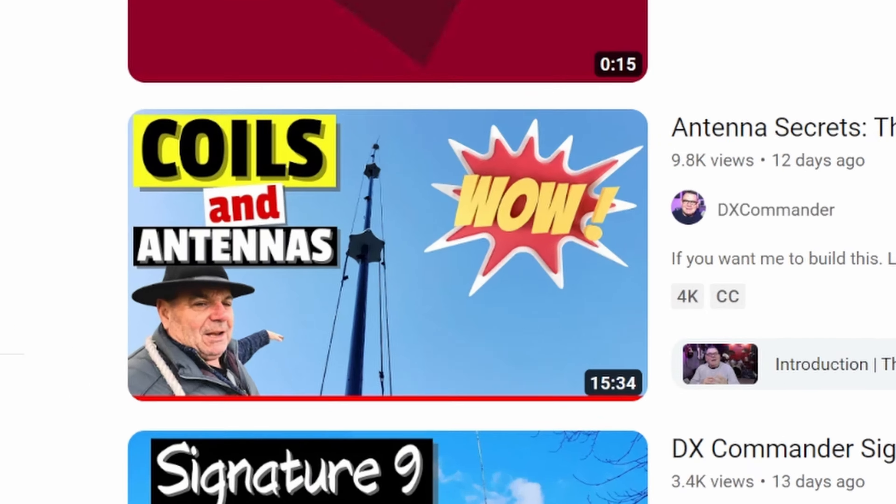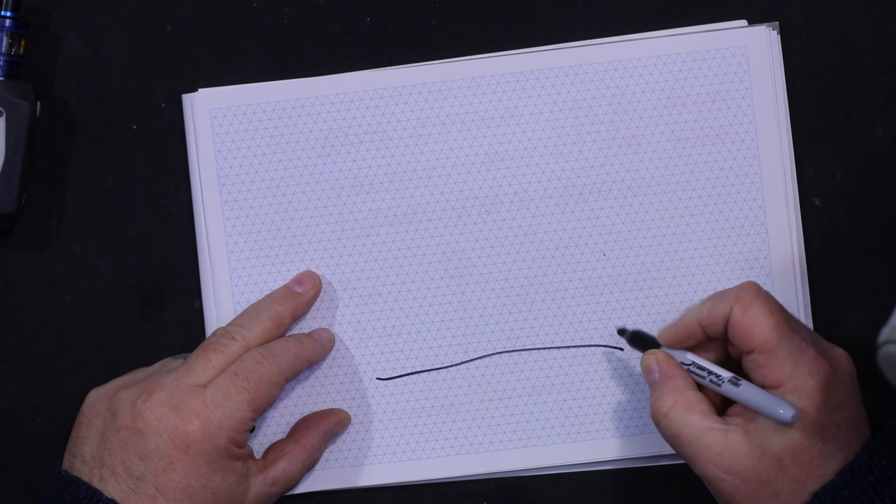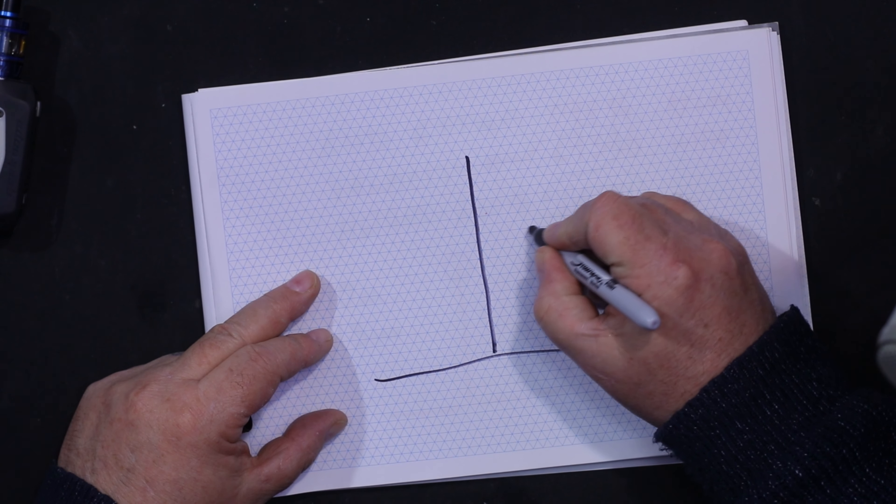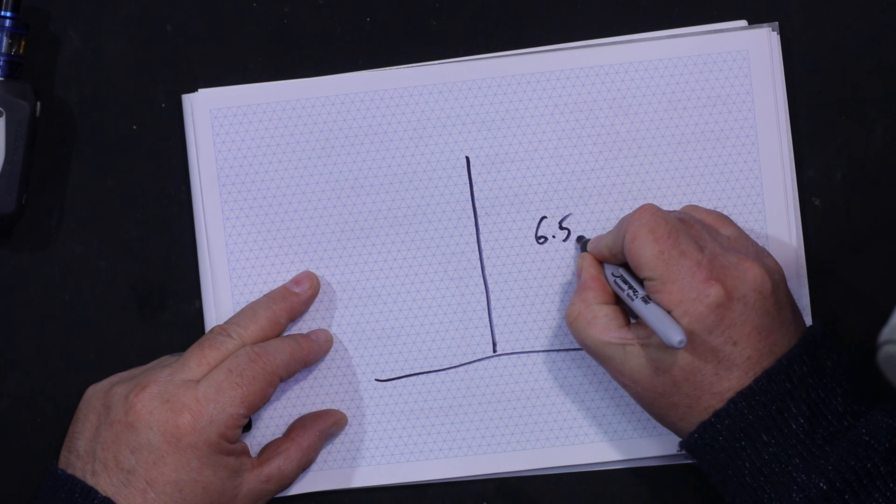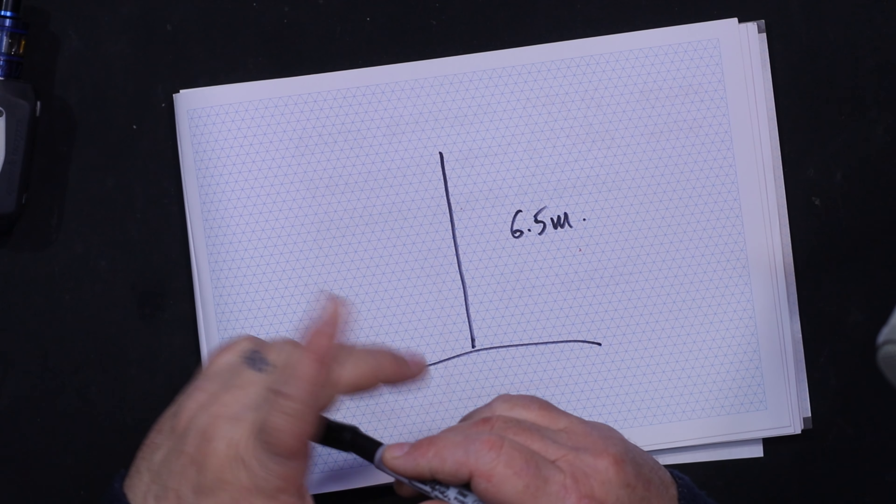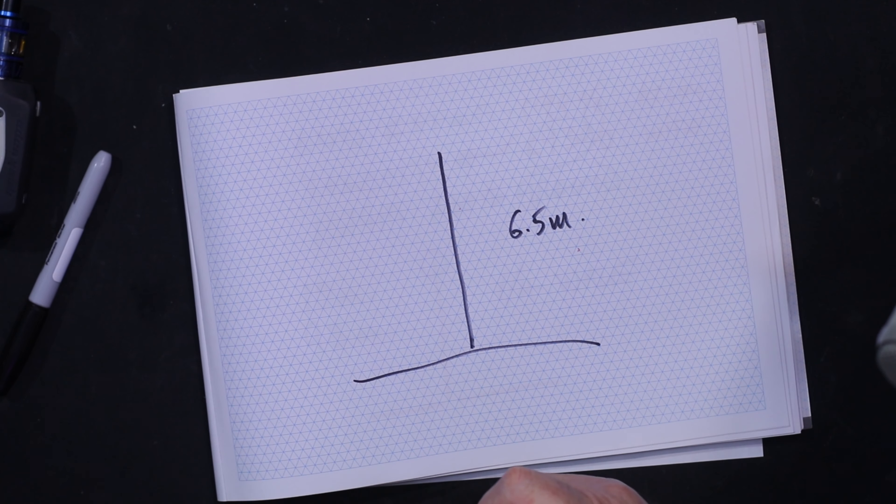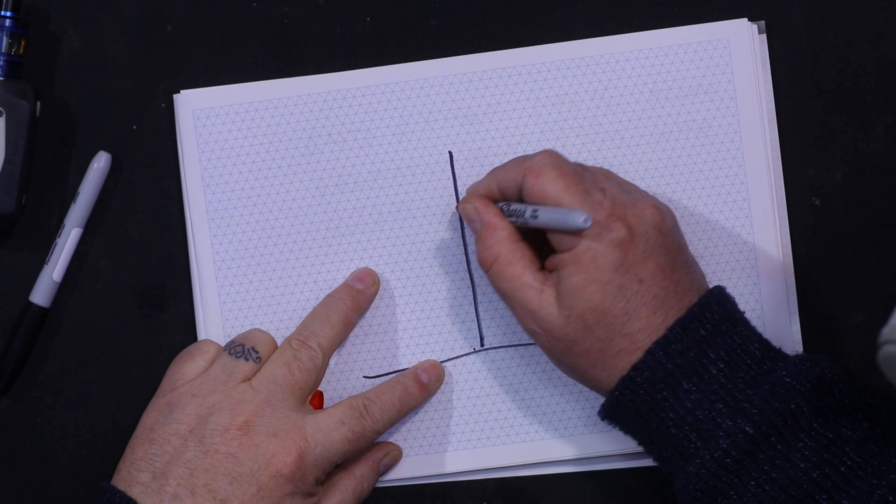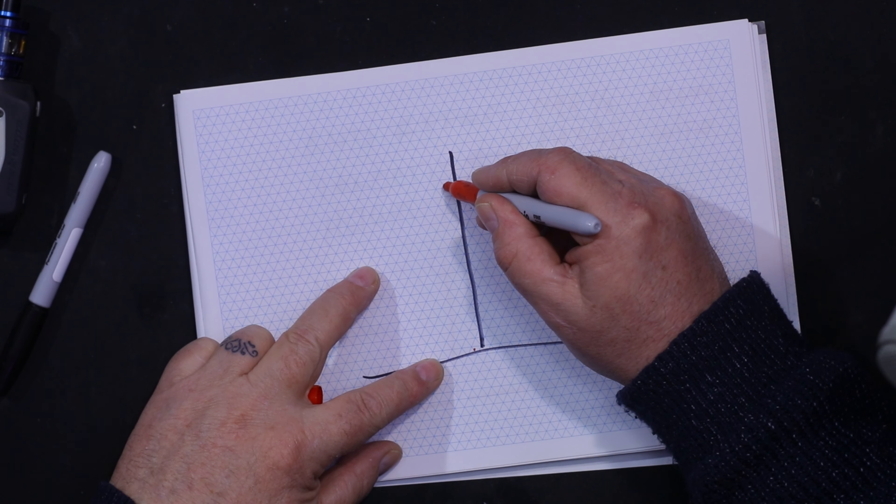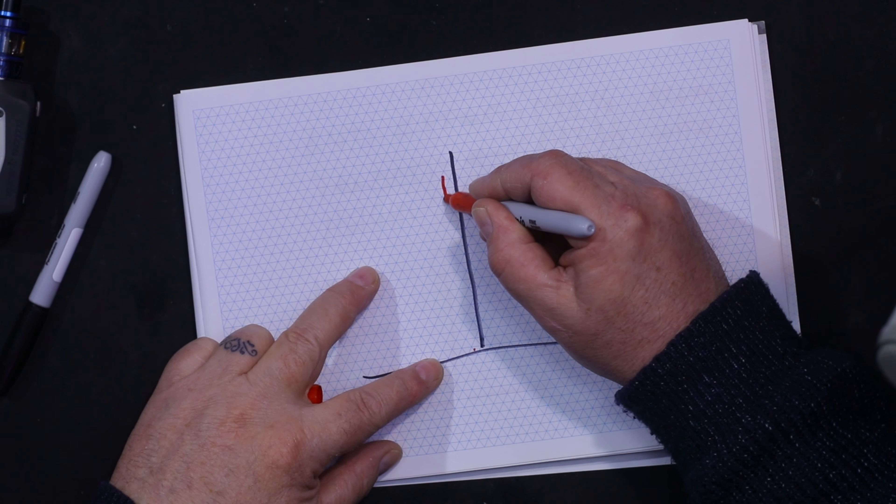I've got a ground here and this antenna which is 6.5 meters long, so that's roughly two-thirds the size of a full size on 40 meters. This element comes up the side to about 6.5 meters, and I've got a coil, quite a long coil.